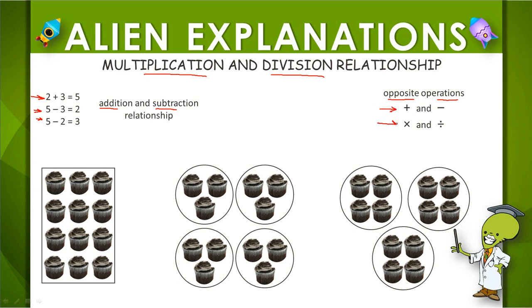Multiplication and division have a similar relationship, an opposite relationship. Here I have an array of 12 cupcakes. I can look at this as 4 groups of 3, like I have in this first image, or I can look at this as 3 groups of 4, like the second image.